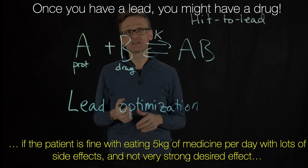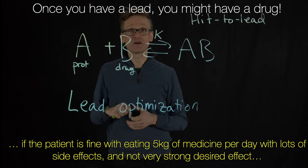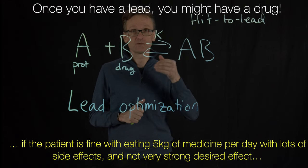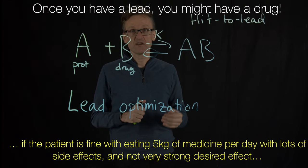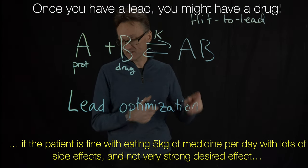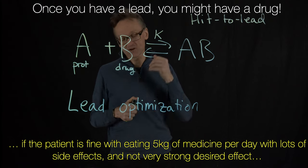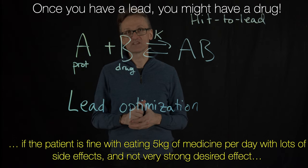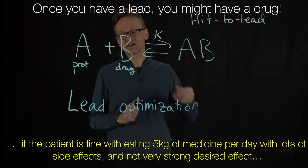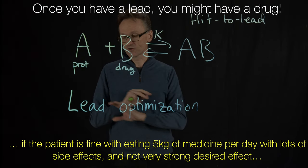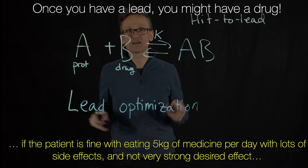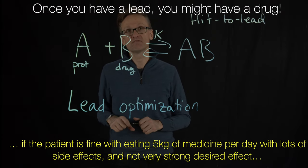Every four weeks the theoreticians and bioinformaticians are expected to have a new prediction. Then we decide what we will test in the lab, and four weeks later we need to have those lab results back. Then we will ask the bioinformaticians: based on those new experiments, what should we test in another four weeks? So it's a very rapid cycle. We could not care less if you have the world's best results in five weeks — I only want to know how good can you be in four weeks.